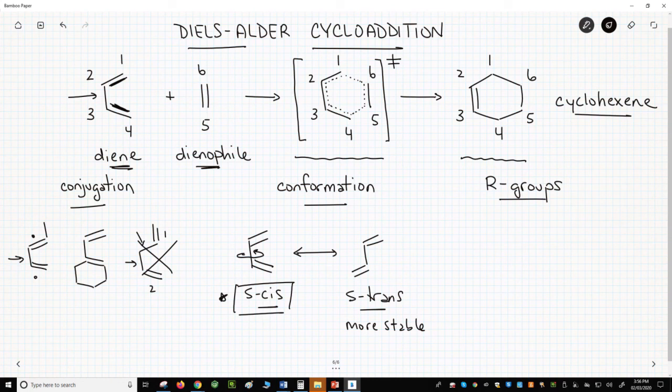Here is an example of a conjugated diene that cannot do a Diels-Alder reaction because the conjugated diene cannot access the S-cis conformation. The middle bond cannot rotate because it's locked in a ring. It's locked as S-trans. No S-cis. No Diels-Alder.